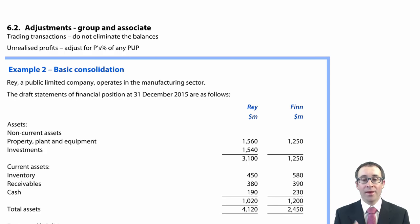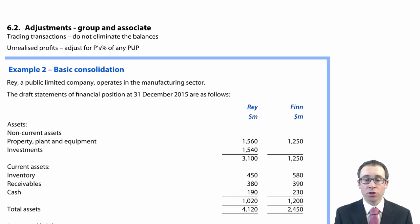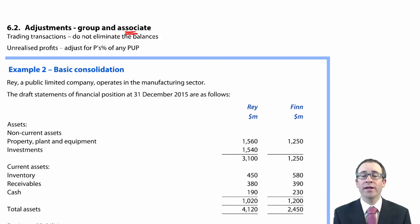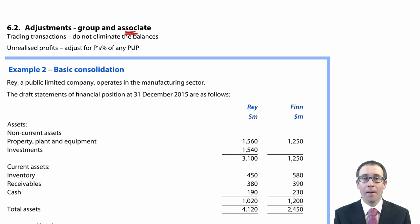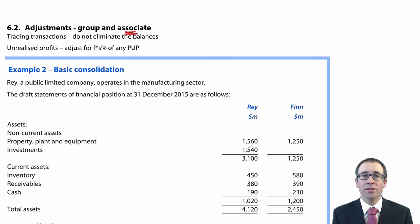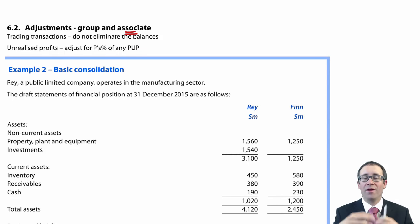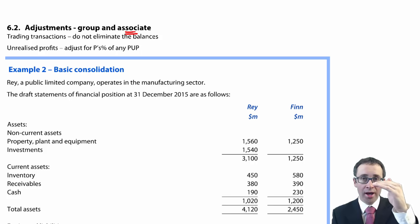Before the big example in the next video, let's cover the adjustments between the group and the associates. If you have trading transactions — receivables and payables with an associate — do not eliminate the balances, because the associate hasn't been consolidated line by line. It's just shown as one line item, so there's no need to eliminate balances line by line.